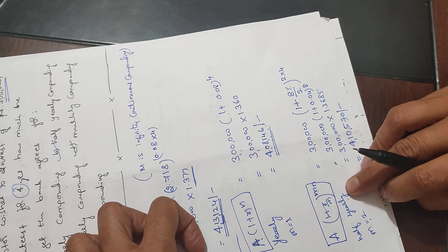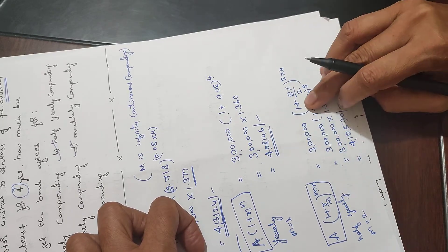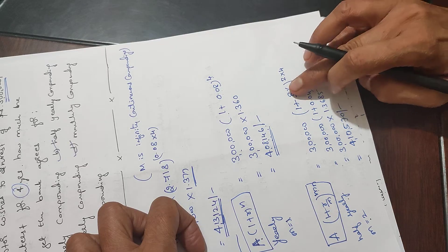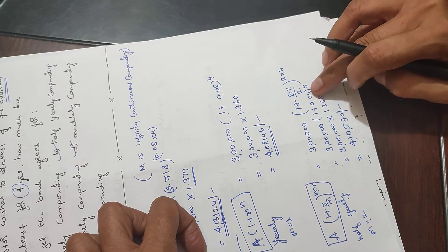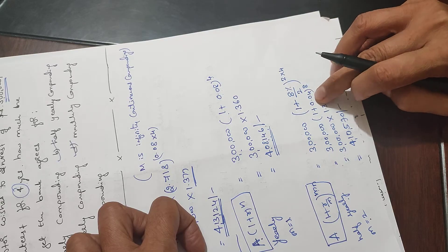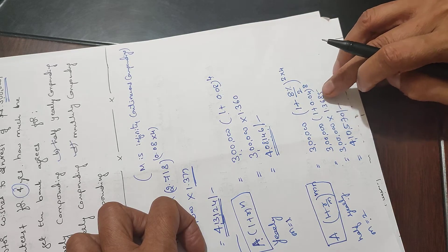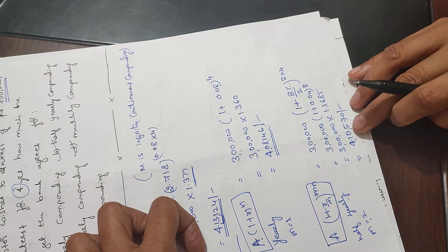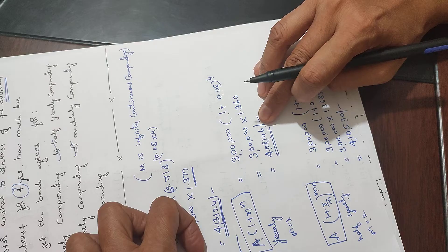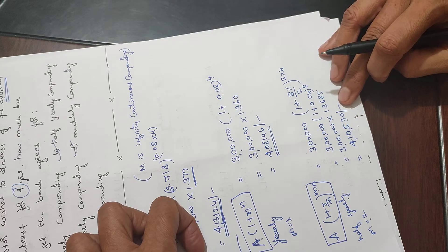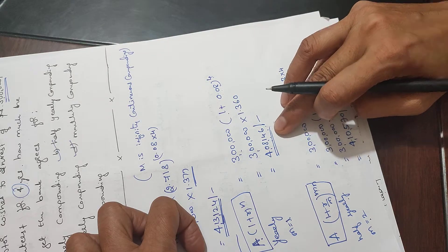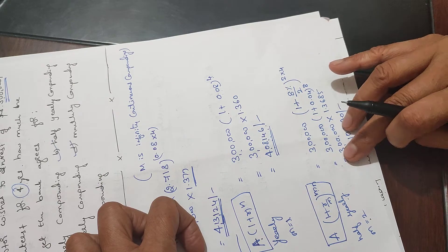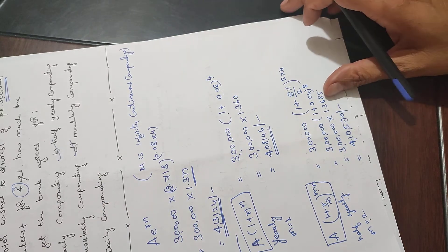Using the same formula: 3 lakh times 1 plus 8 percent divided by 2, raised to 2 into 4. 8 by 2 equals 4 percent, which is 0.04 in decimal. When you multiply these, you get 4 lakh 10,570 rupees. So you get more here - 4 lakh 10,000 versus 4 lakh 8,000 with yearly compounding. That's the beauty of compounding.